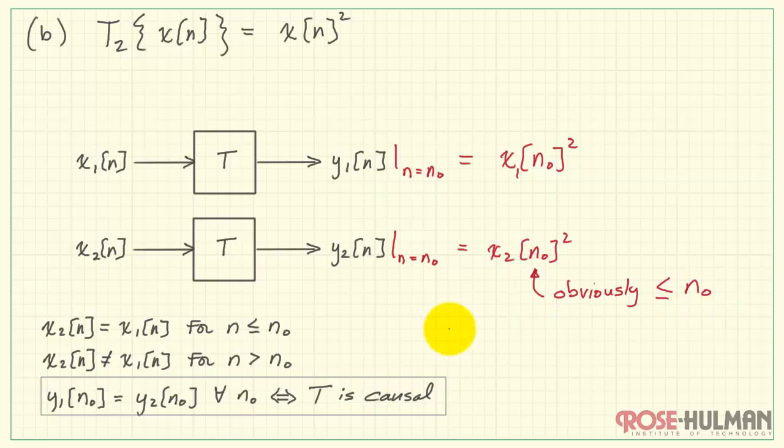Clearly, the time here is always less than or equal to n0. Therefore, y1 and y2 are the same, and T2 is also causal.